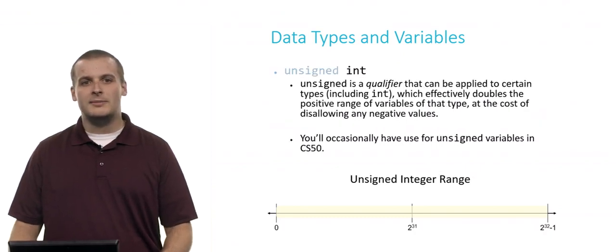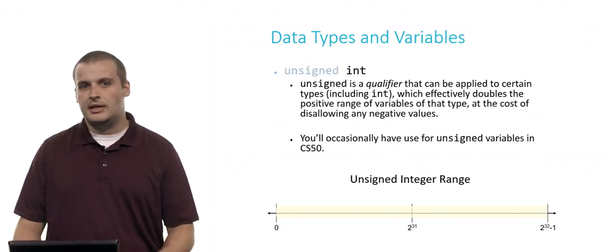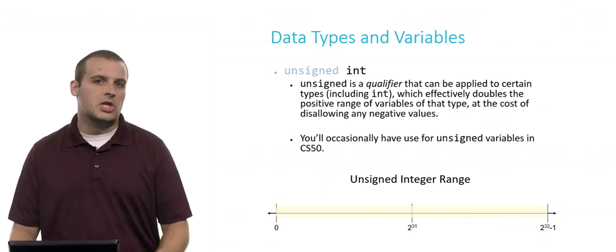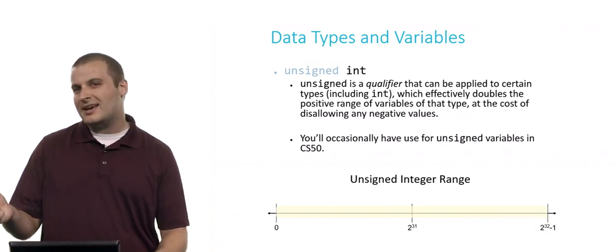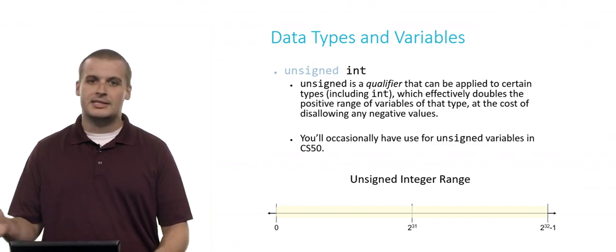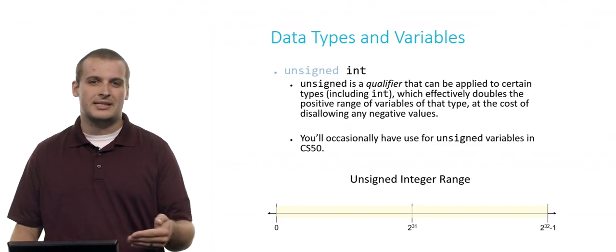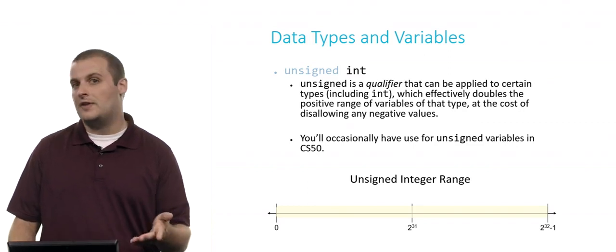So that's what you can fit in an integer variable. Now, we also have something called an unsigned integer. Now, unsigned ints are not a separate type of variable. Rather, unsigned is what's called a qualifier. It modifies the data type of integer slightly. And in this case, what unsigned means, and you can also use unsigned other data types. The integer is not the only one.